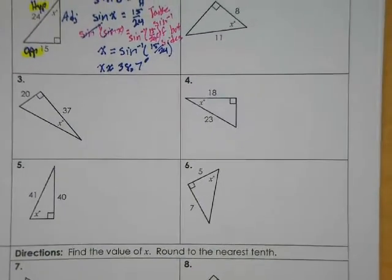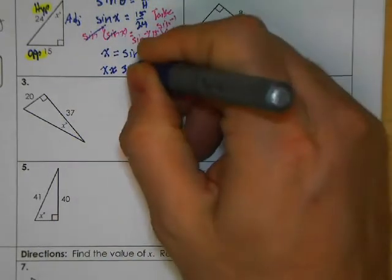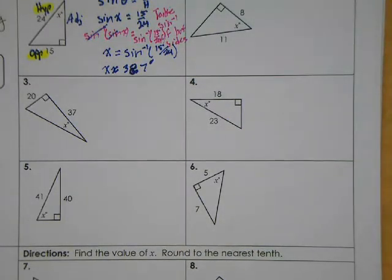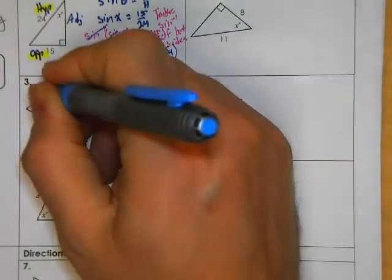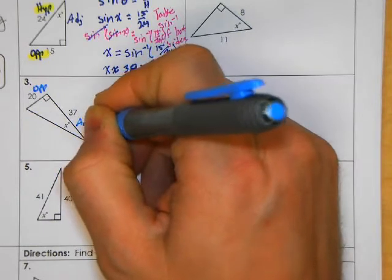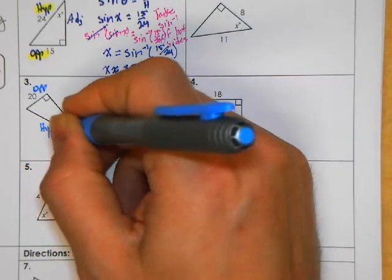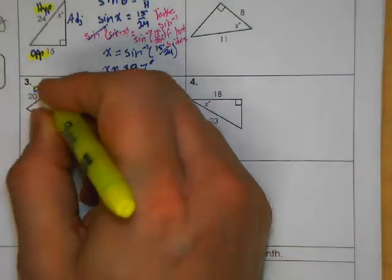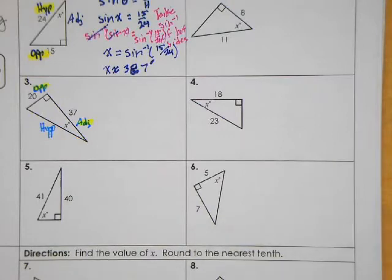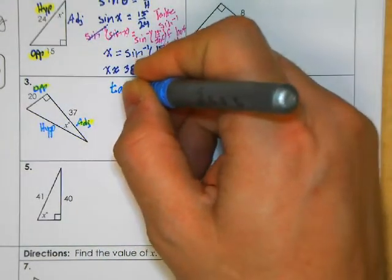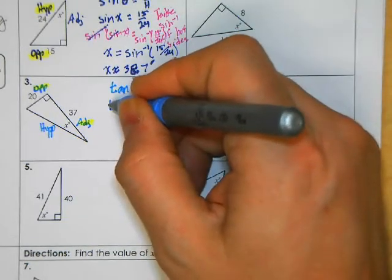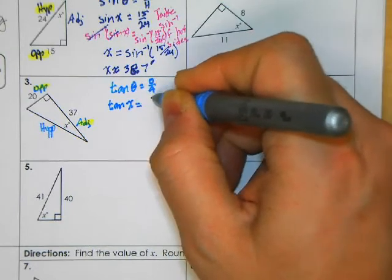Moving on to example three. Based on where the angle is located, this is the side opposite, this is the adjacent side, and this is the hypotenuse because it's opposite the right angle. Of the three sides, we're given the opposite side and the adjacent side. Opposite and adjacent tell us we're going to use tangent. So tangent of my angle equals the opposite side over the adjacent side.